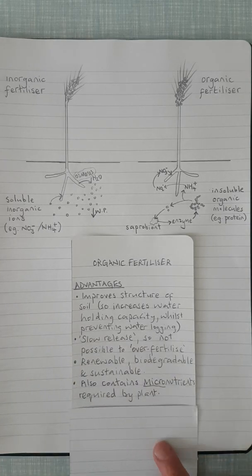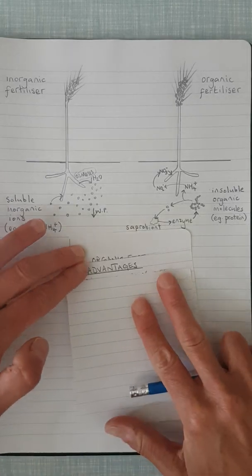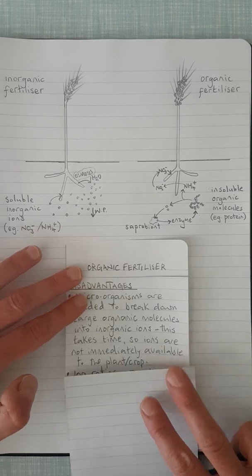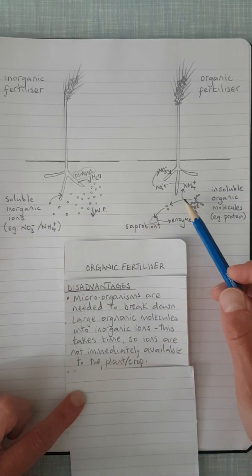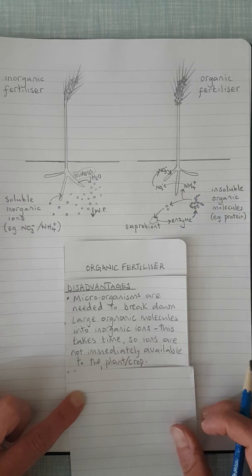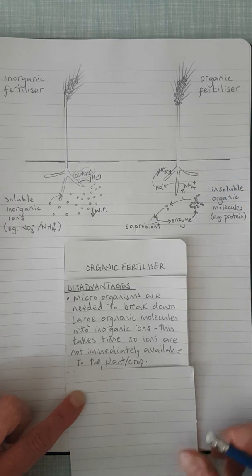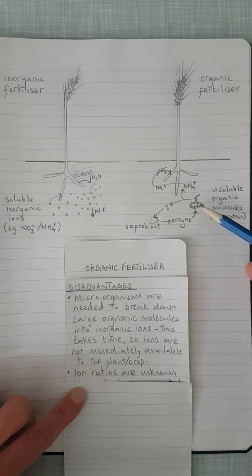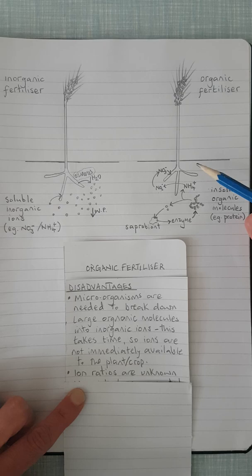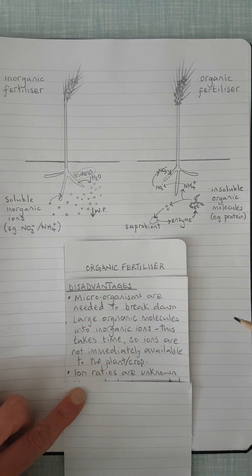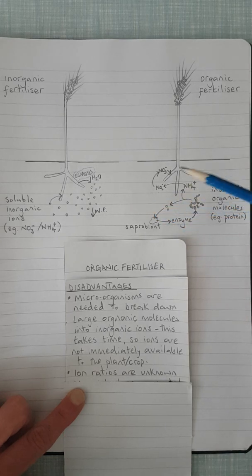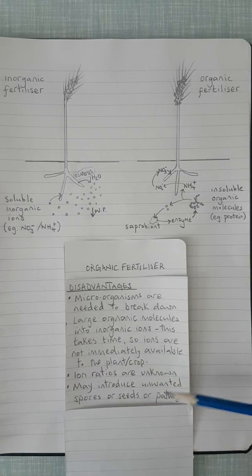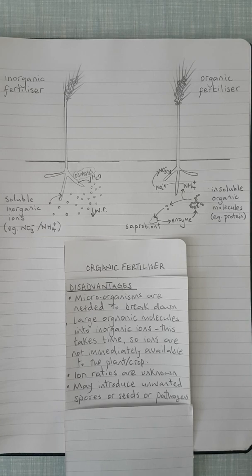Let's think about some disadvantages then. We just mentioned a disadvantage. One of the disadvantages is that it takes a little bit of time for the ions to be made available to the crop plant. So this process of breaking down the large organic molecules into smaller inorganic molecules takes time. So ions wouldn't be immediately available. And we don't know what the ion ratios are. So it's a bit of guesswork, a bit hit and miss, and hope that your crop plant gets the right ratio of nutrients or ions. Whereas with the inorganic fertilizers, you could absolutely be certain of the ratios of ions that you were giving your crop plant. And also if you're laying manure or compost, you might actually introduce some unwanted spores or seeds or even pathogens to your crop.